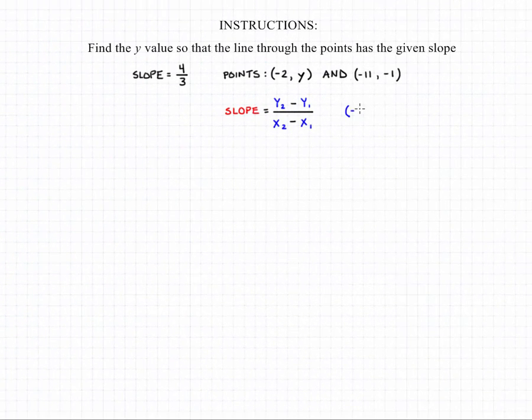In order to identify the y value of the point we're given, we need to write out the points and label them x1, y1, x2, and y2, and then we can plug all the information we have